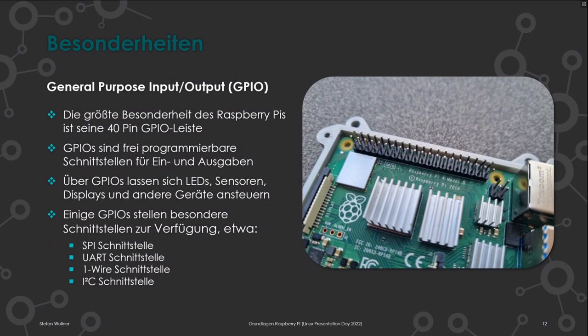Diese GPIOs stellen manchmal auch spezielle Schnittstellen zur Verfügung. Für Temperatursensoren nutzt man oft den One-Wire-Bus: über einen einzigen Pin wird ein spezielles Protokoll gesendet und empfangen. Sehr populär bei externen Breakout-Boards und Displays ist der I²C-Bus, der zwei Pins braucht – auf Pin 3 und 5 der GPIO-Leiste. Diese Schnittstellen müssen erst aktiviert werden; normalerweise sind es zunächst einfache High/Low-Pins.